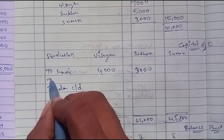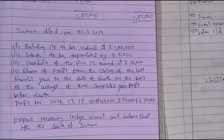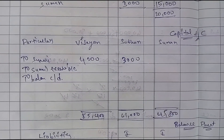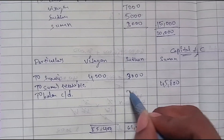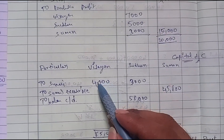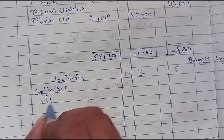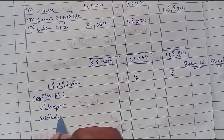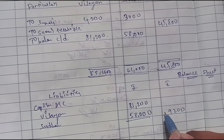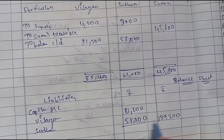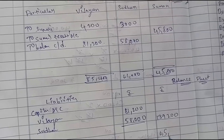Balance carried down is calculated. Since Suman died, the account is transferred to Suman's Executors account. The closing balances are: Suman's Executors account 45,800; Vijayan carry down 81,200; Sudhan carry down 61,000, adjusted to 58,000.